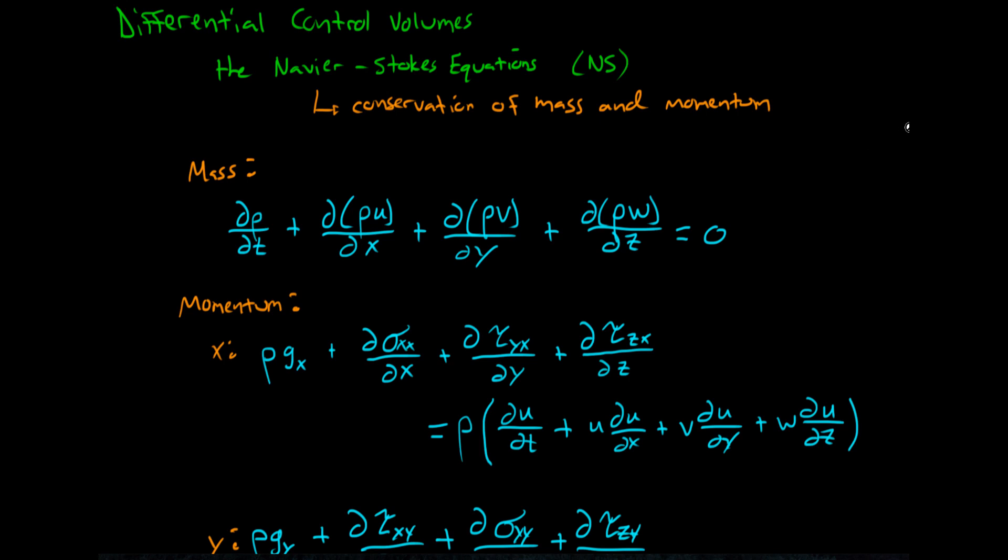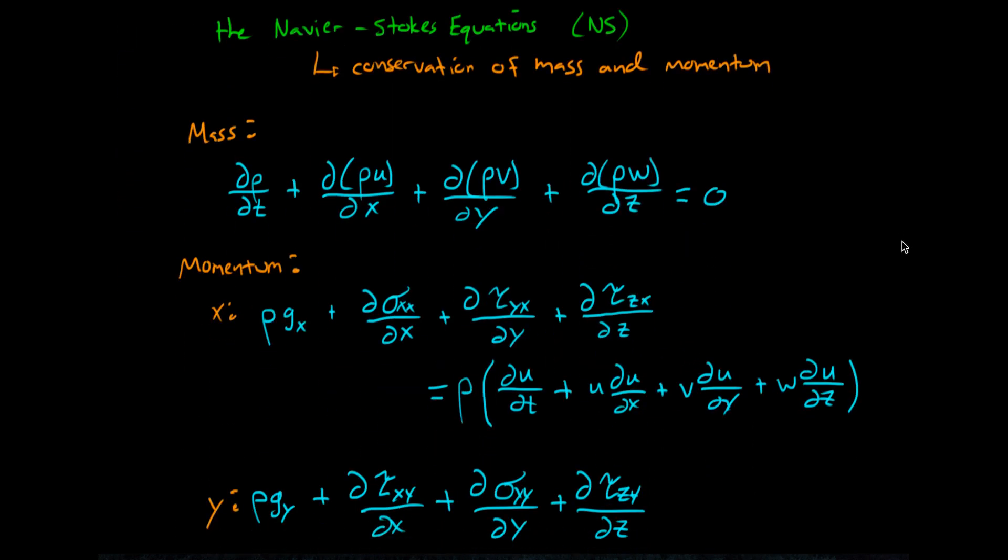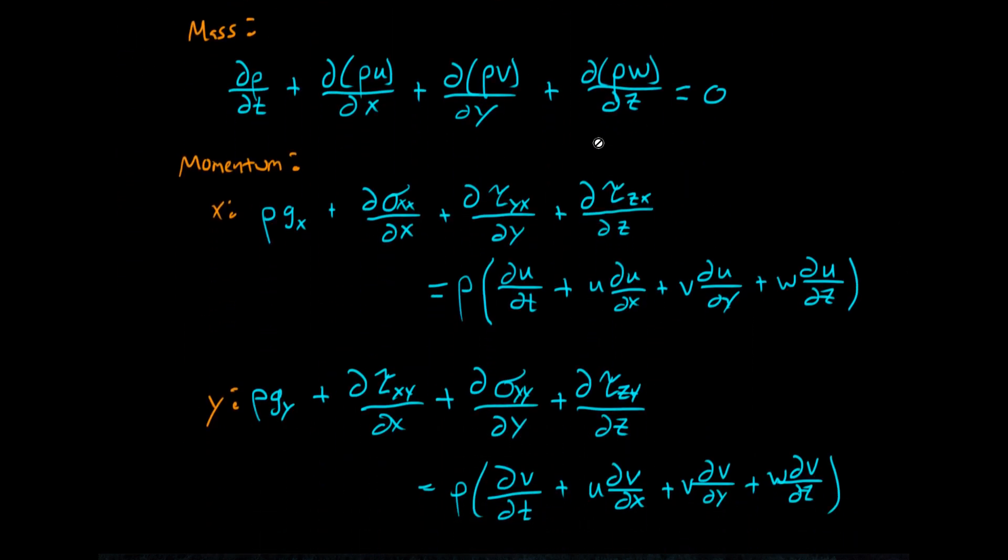So let's dissect for a minute and then we'll dig into these in future videos. First, let's look at the mass equation. What you can see here is a term that is in time and then three terms that are in space for each of our three coordinate directions. In this case, because it's Cartesian, x, y, and z.